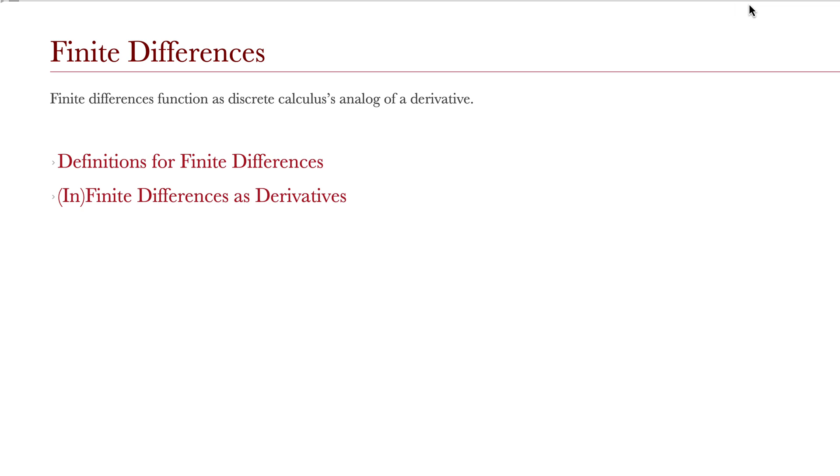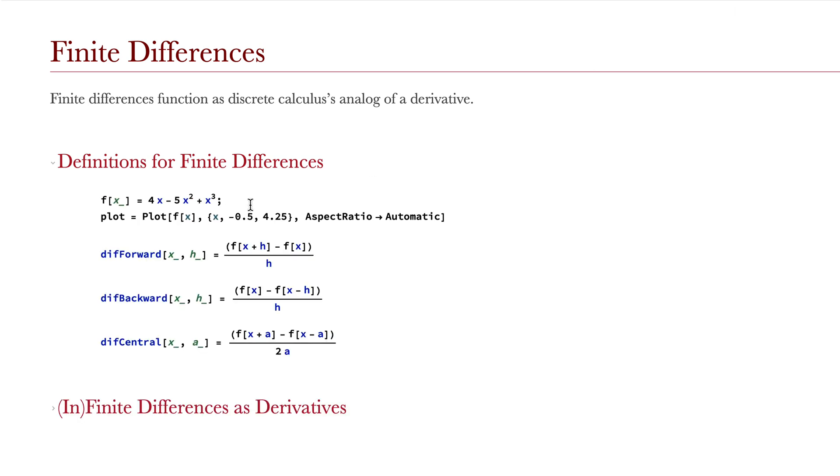Another tool we use to examine sequences is finite differences, which function as discrete calculus's analog of a derivative. Here, we have a function, just a random polynomial, and we can write out a forward definition, backward definition, and central definition of a finite difference.